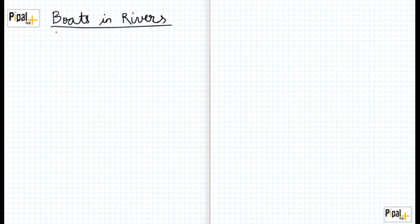Now let's look at boats in rivers. What happens if there is a boat which can move in a still lake? Let's say this boat B can move in a still lake at the speed of SB. So this is a still lake.